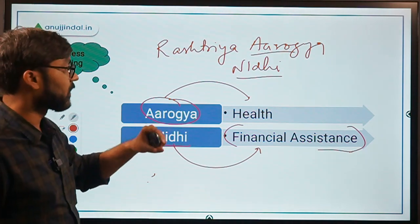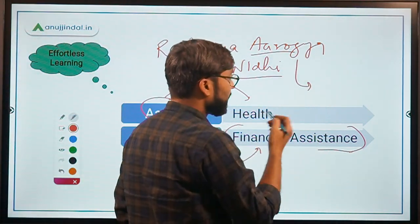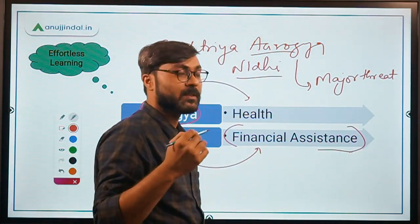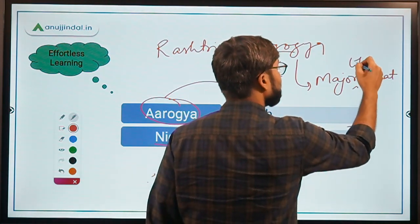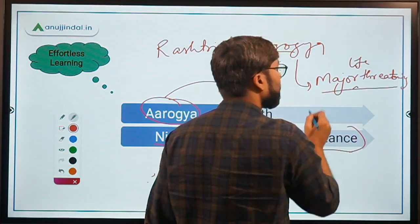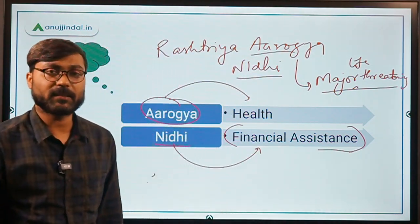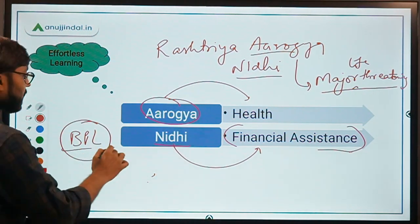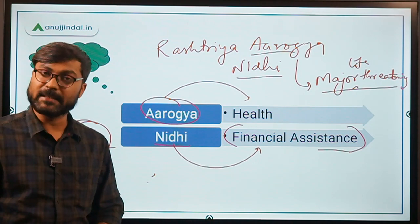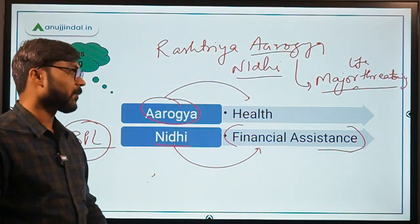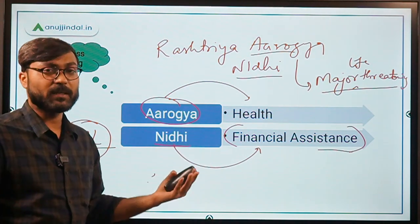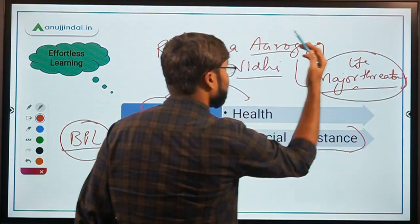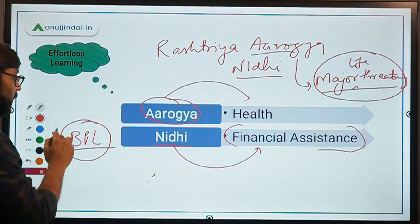One important thing to remember is that under Rashtriya Aarogya Nidhi, the disease should be a major life-threatening disease. Financial assistance is provided to BPL — Below Poverty Line — families for the treatment of major life-threatening diseases. Remember two things: the disease must be major life-threatening, and assistance is for BPL families.